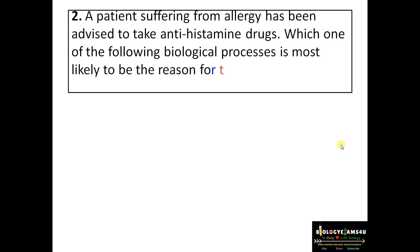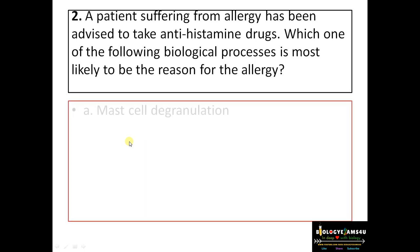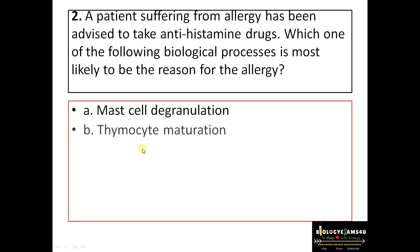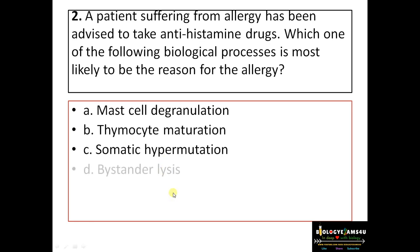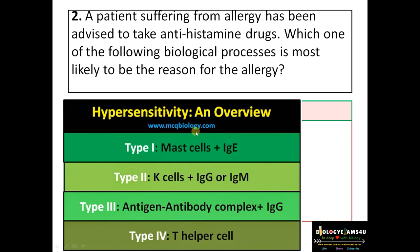Question number two: a patient suffering from allergy has been advised to take antihistamine drugs. Which biological process is most likely the reason for the allergy? Options: A) mast cell degranulation, B) thymocyte maturation, C) somatic hypermutation, D) opsonization. Allergy is associated with mast cells, so the answer is A) mast cell degranulation. For reference: Type 1 hypersensitivity involves mast cells with IgE; Type 2 involves K cells with IgG/IgM; Type 3 involves antigen-antibody complexes with IgG; Type 4 involves T helper cells.